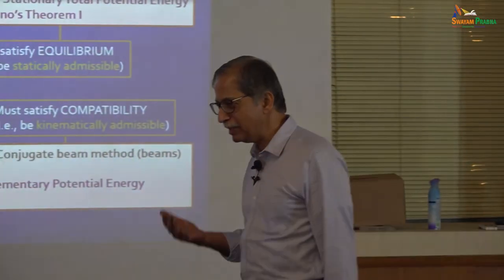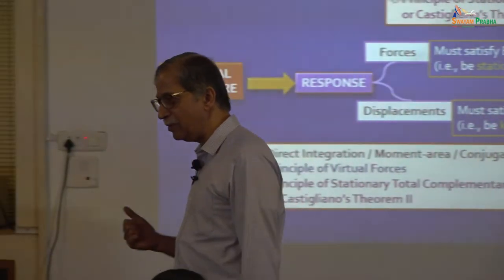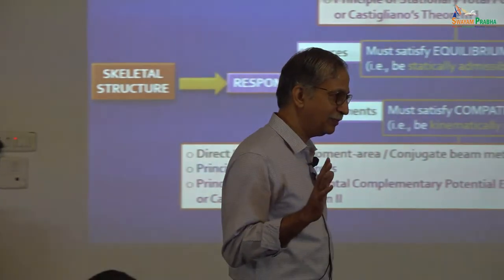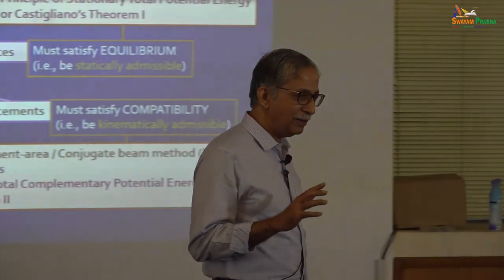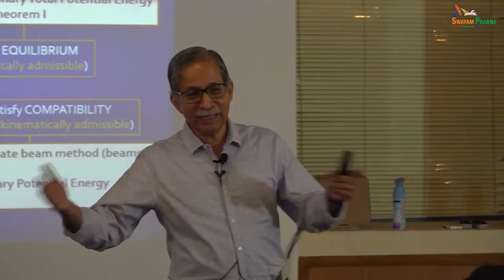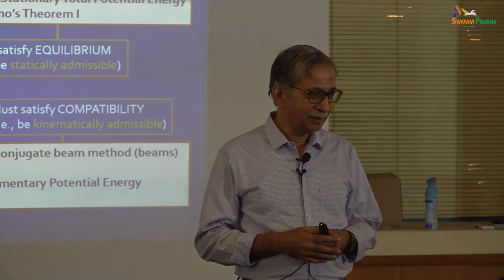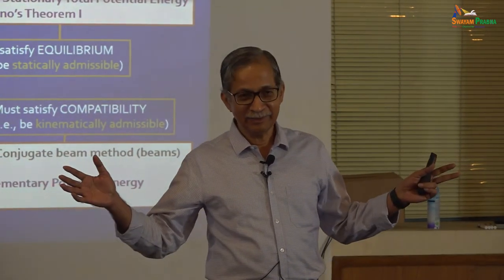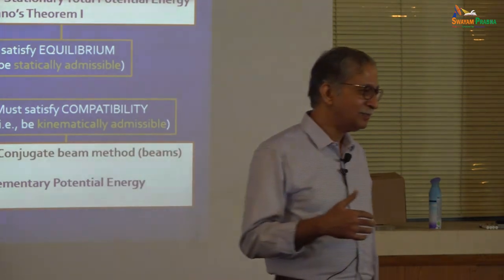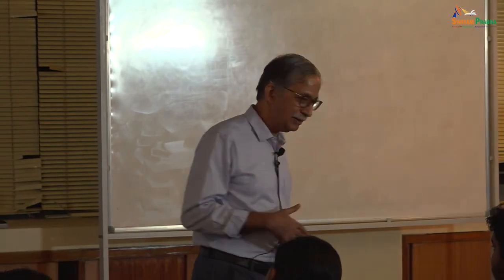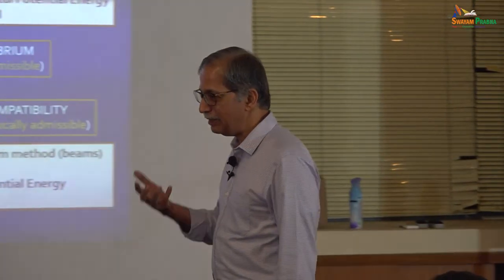If you want to convert into scalar components, you say sigma Fx equals zero, sigma Fy equals zero, sigma Fz equals zero, sigma Mx equals zero, sigma My equals zero, sigma Mz equals zero. You can cut a body into many free bodies and end up with many equations, but not all of them will be linearly independent. There is a way to check it — you will get only a certain number of linearly independent equations.